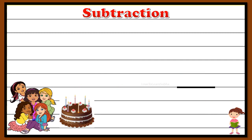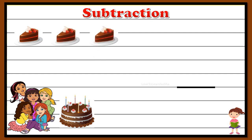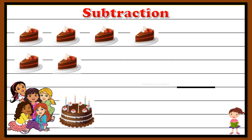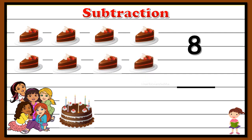Now let's check out another example. Here, Dora and her friends are at a birthday party. Let's check out what objects are available — one, two, three, four, five, six, seven, eight — so totally there are eight pieces of cake. Since there are five friends, we have to subtract five pieces of cake.